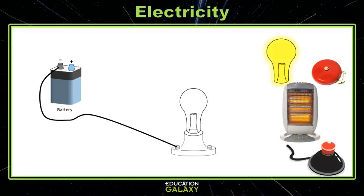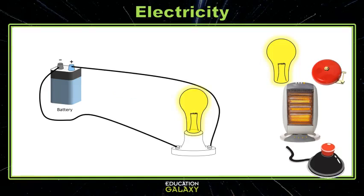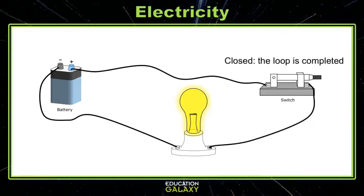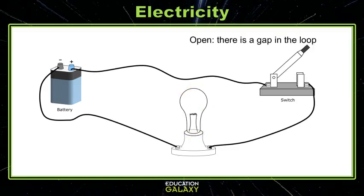So we attach our device to the wire, and now we have to make a loop for the current to travel back to the battery. Now this circuit is going to turn on our light, but you probably want to turn this light off again, so let's add a switch. The switch can now either be closed, which means the loop is completed, or open, meaning there's a gap in the current which turns off our light.